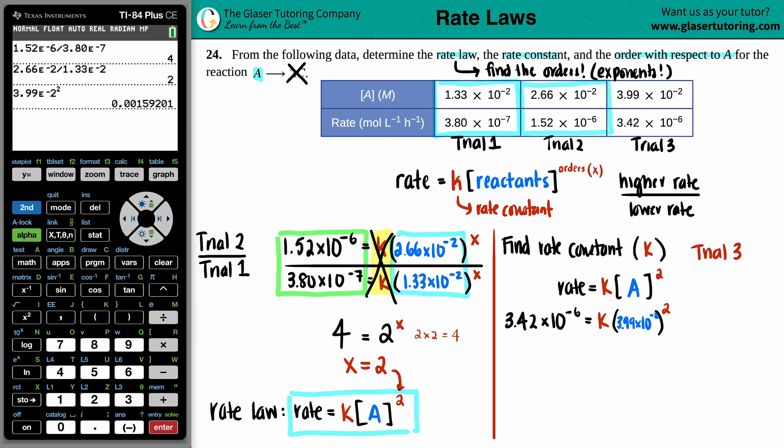So, let's do that. 3.99 times 10 to the negative 2nd. I'm going to square that value. There we go. So, 3.42 times 10 to the negative 6th equals that value, 0.001592 times by K. When I do the math, I'm not going to round. I'll take this whole value here. So, let's divide on both sides by 0.001592. This will cancel.